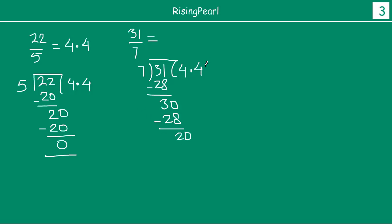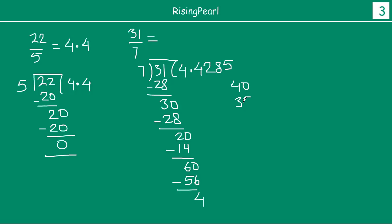So 7 twos are 14. 20 minus 14 is 6. 0. So 7 eights are 56. 60 minus 56 is 4. So let's continue this — we have 40.